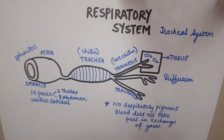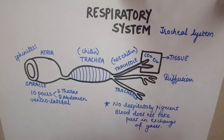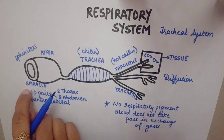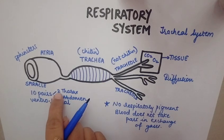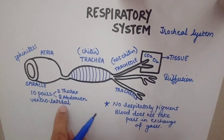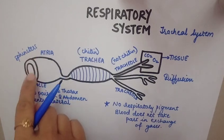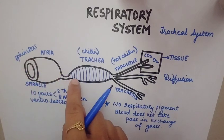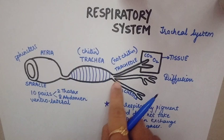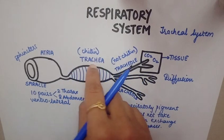To summarize the respiratory system of the cockroach: there are 10 pairs of spiracles on the ventrolateral surface — 2 thoracic and 8 abdominal. Sphincters are present in the spiracles to regulate gas entry. The gases enter and pass into the trachea, which is lined by chitin.